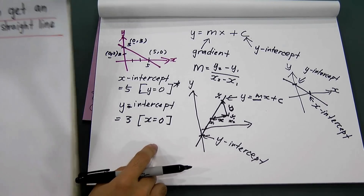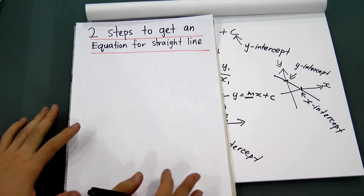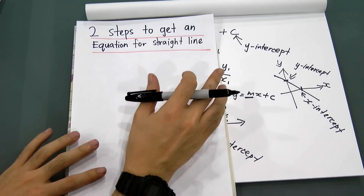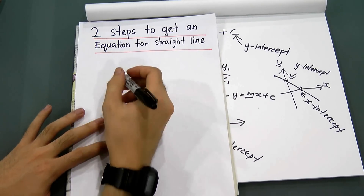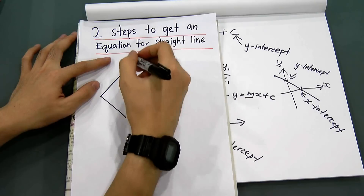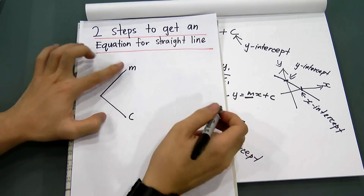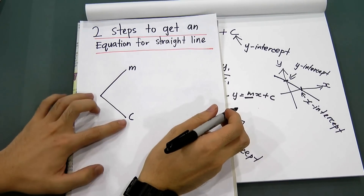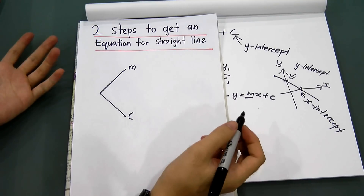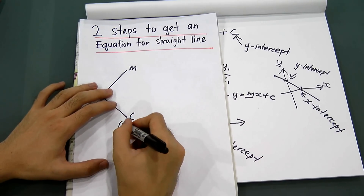Remember: at the x-intercept, y will equal zero; at the y-intercept, x will equal zero. If you have this basic understanding, let's move on to the two steps to get an equation for a straight line. Normally in most past-year questions, he will ask you to find m and c — m is the gradient and c is the y-intercept, and sometimes also the x-intercept.